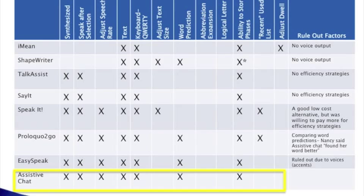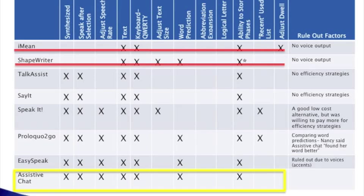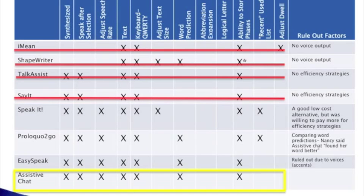Now we compare which apps have these features and start ruling out apps. The first app gets ruled out because there's no voice output. Shapewriter, although it's a text-based app with a QWERTY keyboard and can store phrases and has word prediction, there's no voice output, so it's ruled out. Talk Assist has more features than the previous apps yet has no efficiency strategies, and the same with SayIt, so those are ruled out as well. SpeakIt is a good low-cost alternative, but Nancy was willing to pay more to have efficiency strategies, so it was ruled out. Proloquo now has word prediction, yet she said the app was too expensive, so it was ruled out.